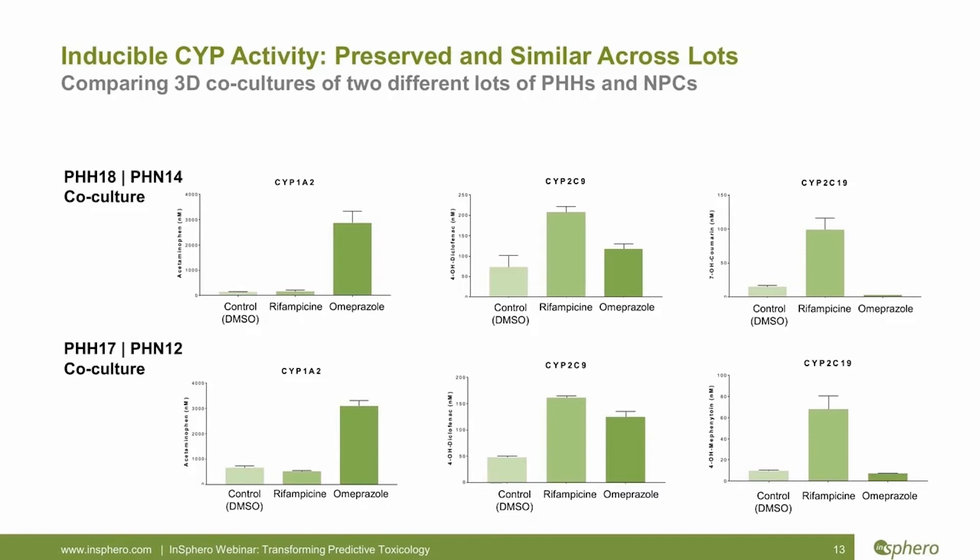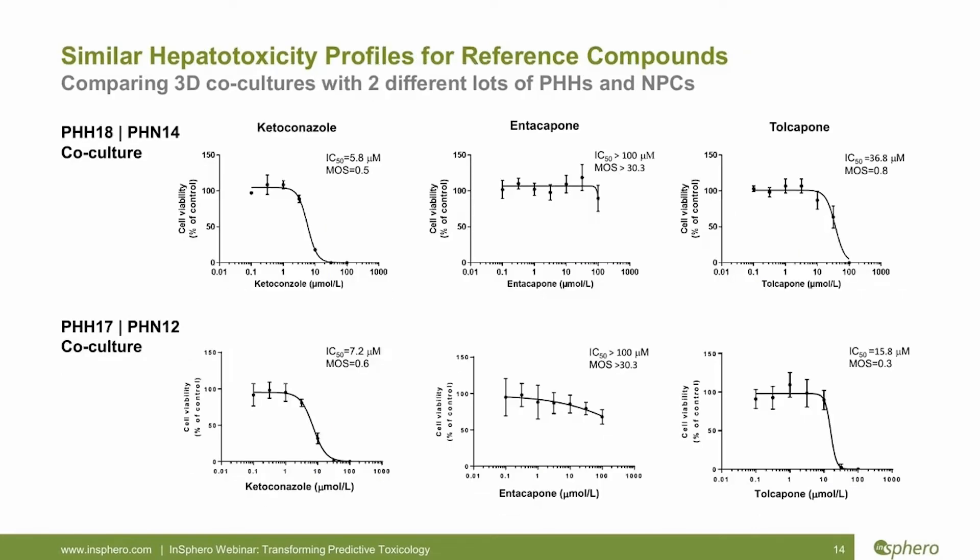All of these characteristics — tight cell-cell connections, polarity, albumin secretion, functioning metabolic enzymes, and nuclear receptor expression — are so important to maintain in 3D in vitro models because they allow the cells to act more in vivo-like, much more so compared to suspension or 2D plated cultures. Therefore, it is expected that these 3D models should also respond more appropriately to toxic and safe compounds.